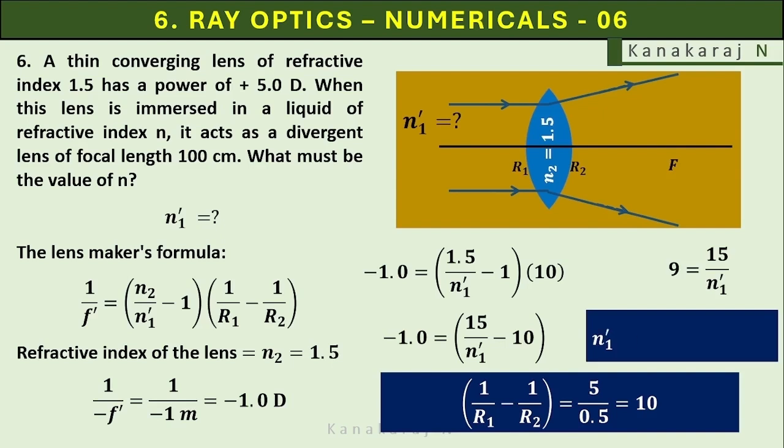n1 prime equals 15 upon 9 equals 5 upon 3 equals 1.67 which is greater than 1.5. Therefore, the lens acts as a divergent lens because the surrounding medium has a refractive index greater than the refractive index of the lens.